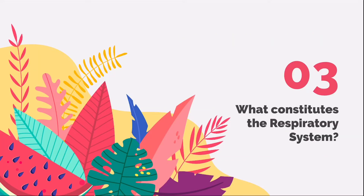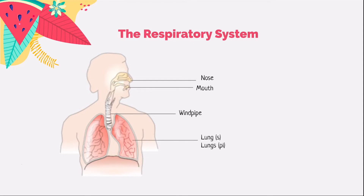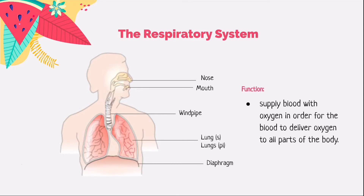With the process of breathing at the back of our minds, let's find out what constitutes the respiratory system. The respiratory system consists of the nose, the mouth, the windpipe, the lungs, and the diaphragm, which sits below your lungs. The main function of the respiratory system is to supply blood with oxygen so that the blood can deliver oxygen to all parts of the body.